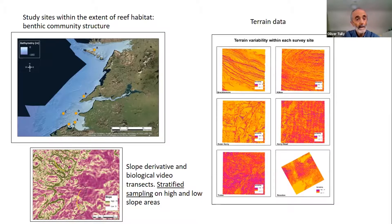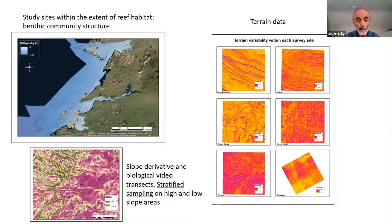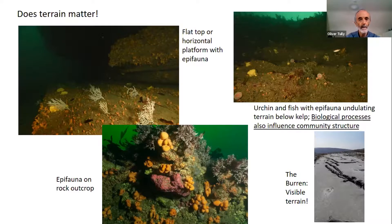We derived various terrain derivatives from the bathymetry data, including slope, rugosity, aspect, and variability, and then explored the relationships between that terrain data and the biological data, acquiring biological data on georeferenced video transects, stills, etc. There's an example where we can place a video transect on an area of low slope versus a video transect on high slope, so we're already beginning to stratify our sampling according to the underlying terrain. But there's a question mark: does terrain actually matter?